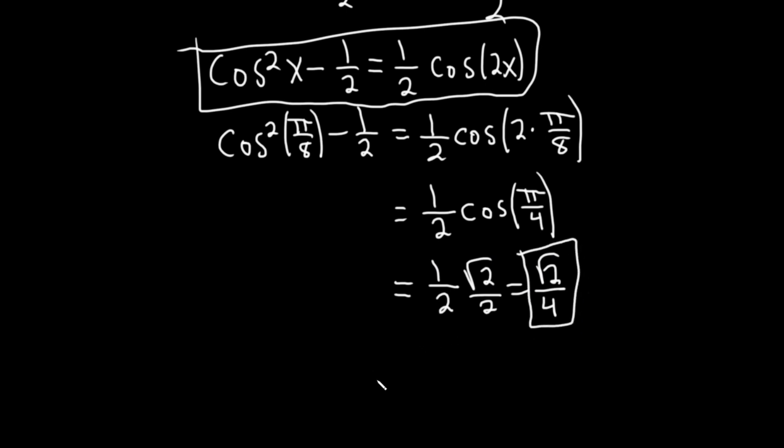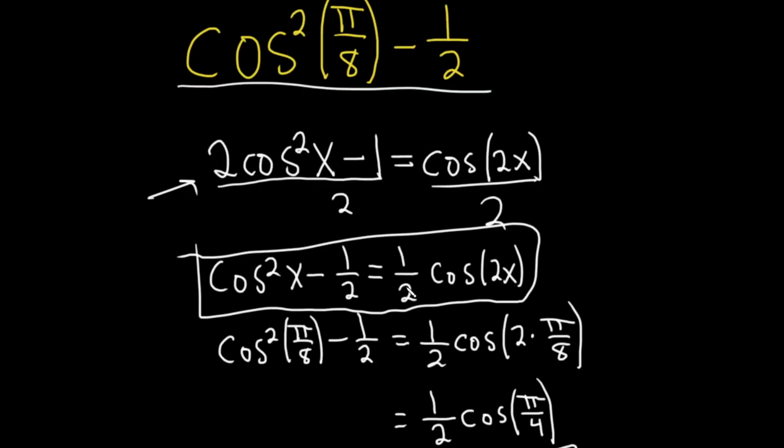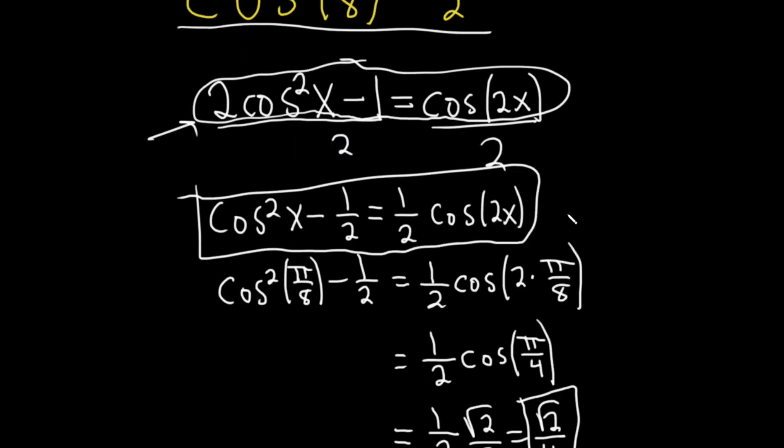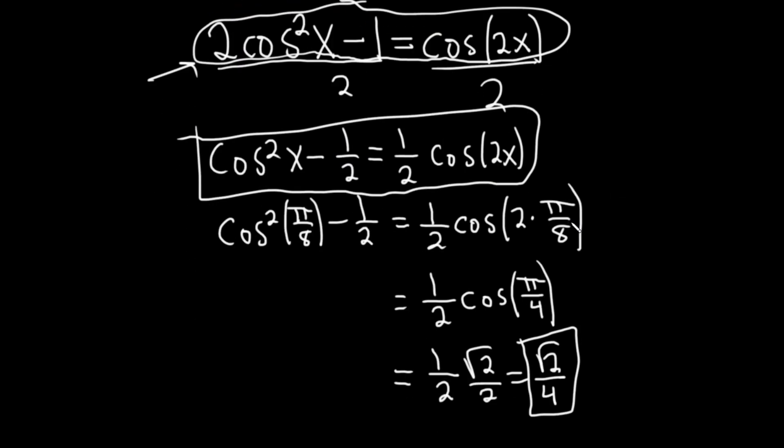And that would be it. That would be the exact value. So I think the trickiest thing in this problem is knowing what identity to use. But if you know this one right here, 2 cosine squared x minus 1 equals cosine 2x, then you can kind of say, hey, wait a minute. There's a minus. There's a number. There's a 2 missing. And there's a 1 half here. So it's almost there. Let me write this down and play with it. See if I can make it match this and then apply it to pi over 8. I hope this video has been helpful. Good luck.